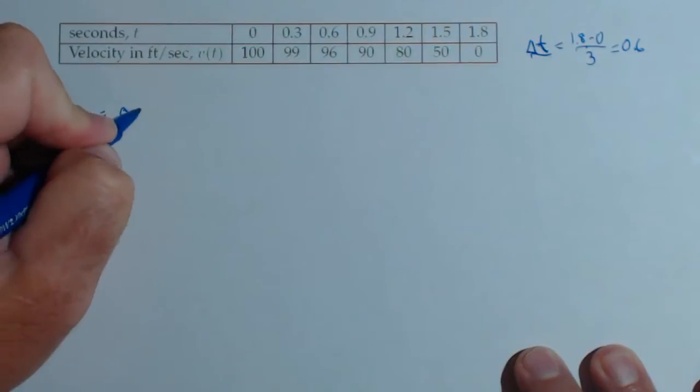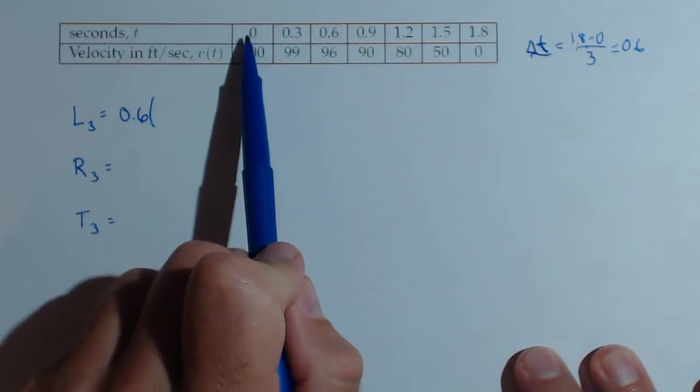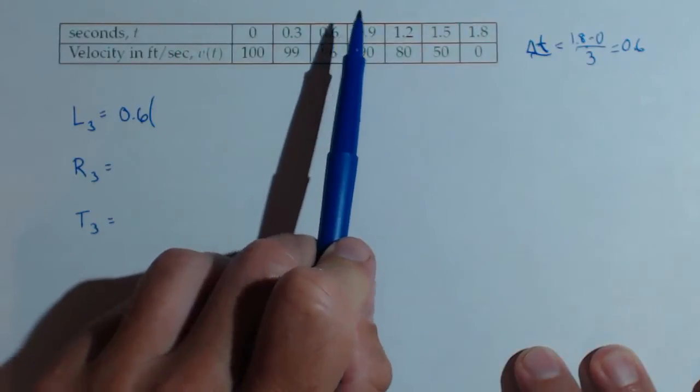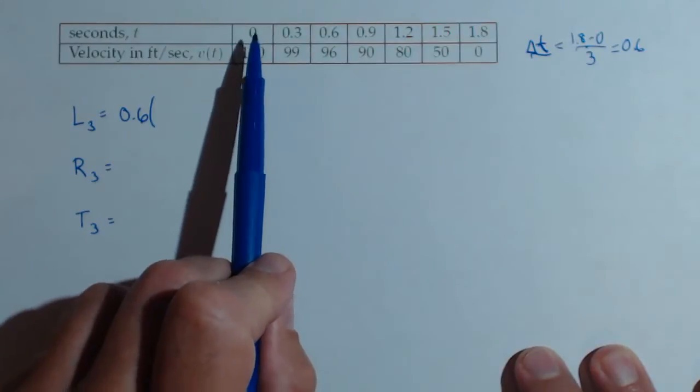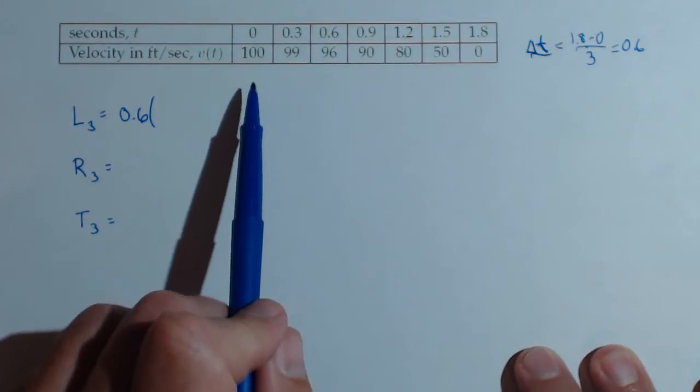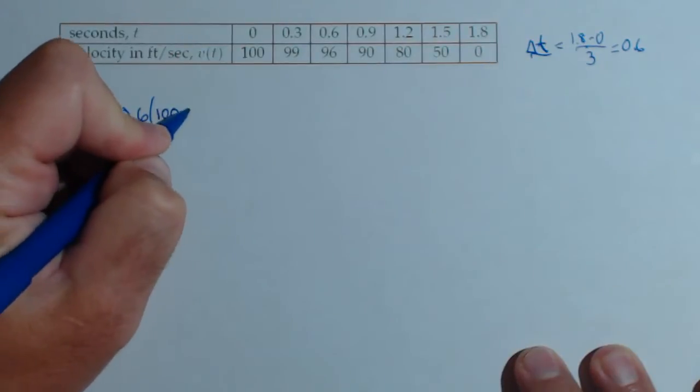For our left-hand rule, we'll have 0.6, and we're going to use the left-hand endpoints. The interval goes from 0 to 0.6 to 1.2 to 1.8 for L sub 3, and I want to use the left-hand endpoint, so I'm going to be using the fastest time on each interval. So 100 for my first interval.